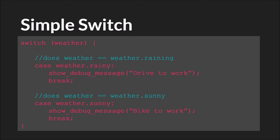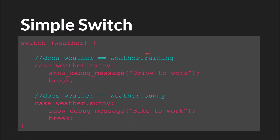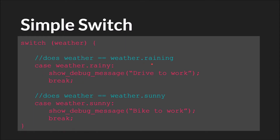Here is a very basic switch case. We have the keyword 'switch', then 'weather' — just a simple variable. We have two cases and no default, so if there's no exact match this code won't run at all. We're saying: does weather equal weather.raining? This is an enum — you can see the enum tutorial for more on those. If so, show debug message 'drive to work'. Does weather equal weather.sunny? If so, show debug message 'bike to work'. And if there isn't an exact match, this code won't run.